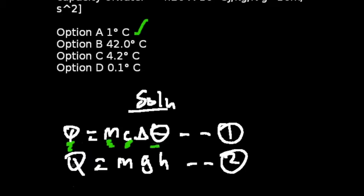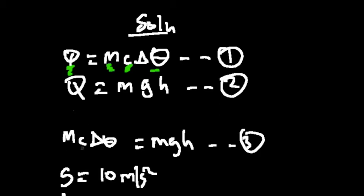And so the quantity of heat supplied is also proportional to the mass multiplied by the gravity multiplied by the height. So we can say from equation one and two that the mass multiplied by the specific heat capacity multiplied by change in temperature is equal to the mass multiplied by gravity multiplied by the height. So that gives us equation three.